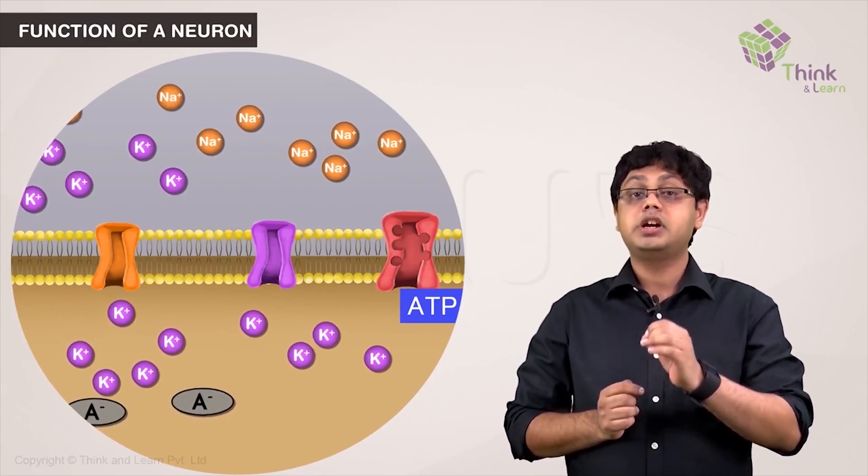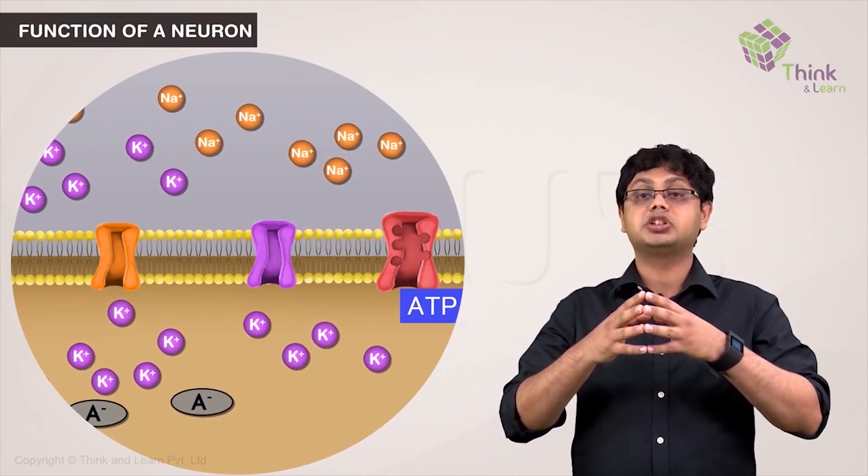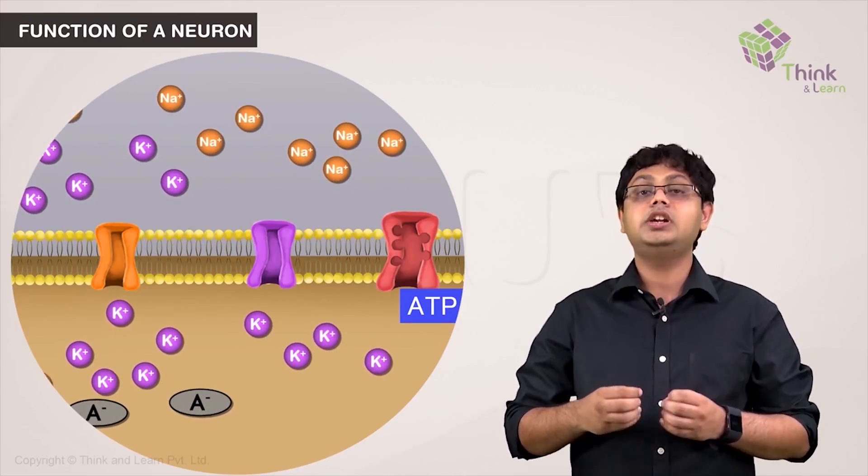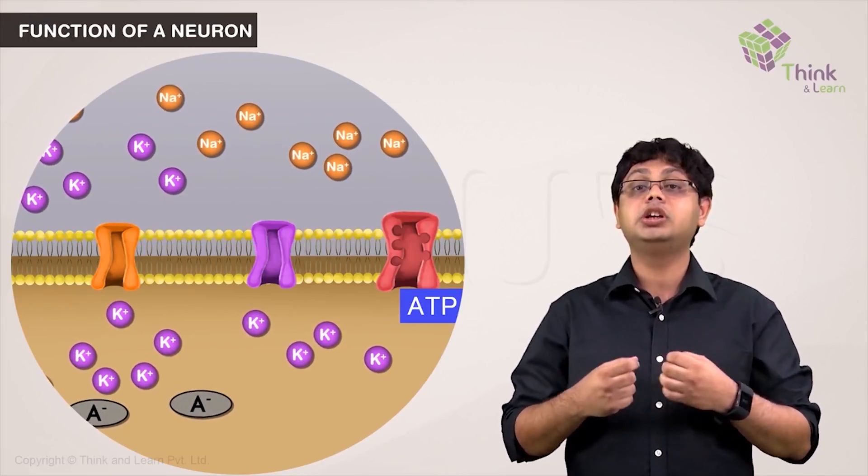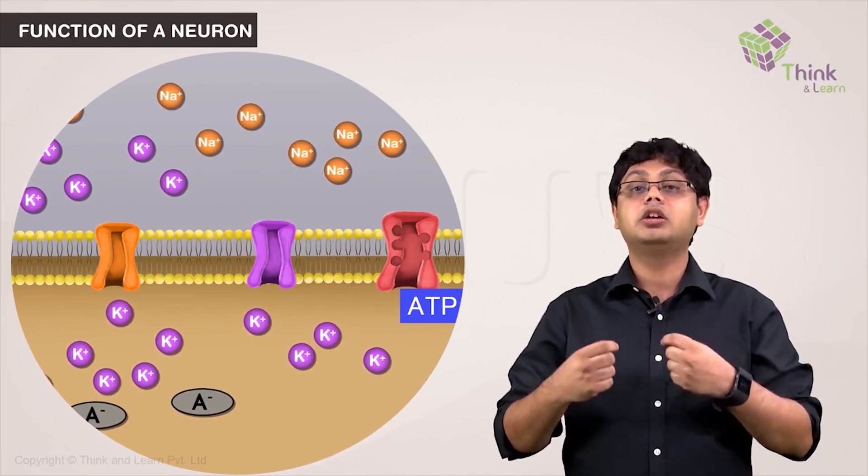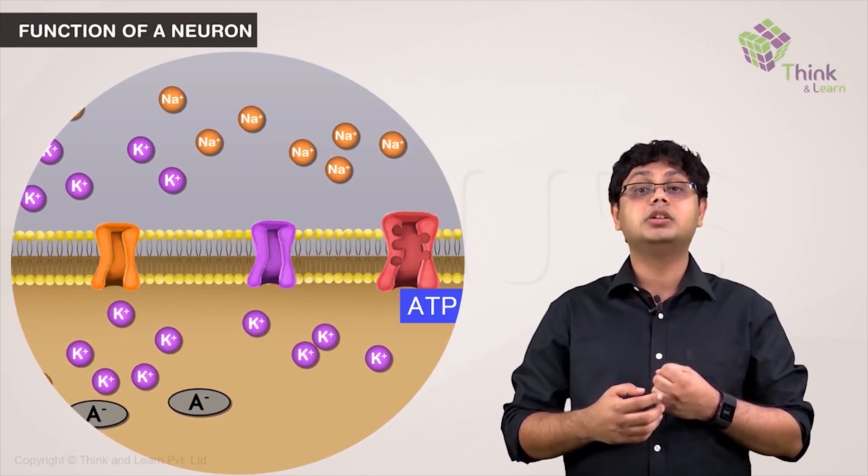As you can see, the pump is not electrically neutral. It brings a lesser number of positive ions inside the cell while taking more out, thus playing a role in establishing and maintaining the electrical gradient.